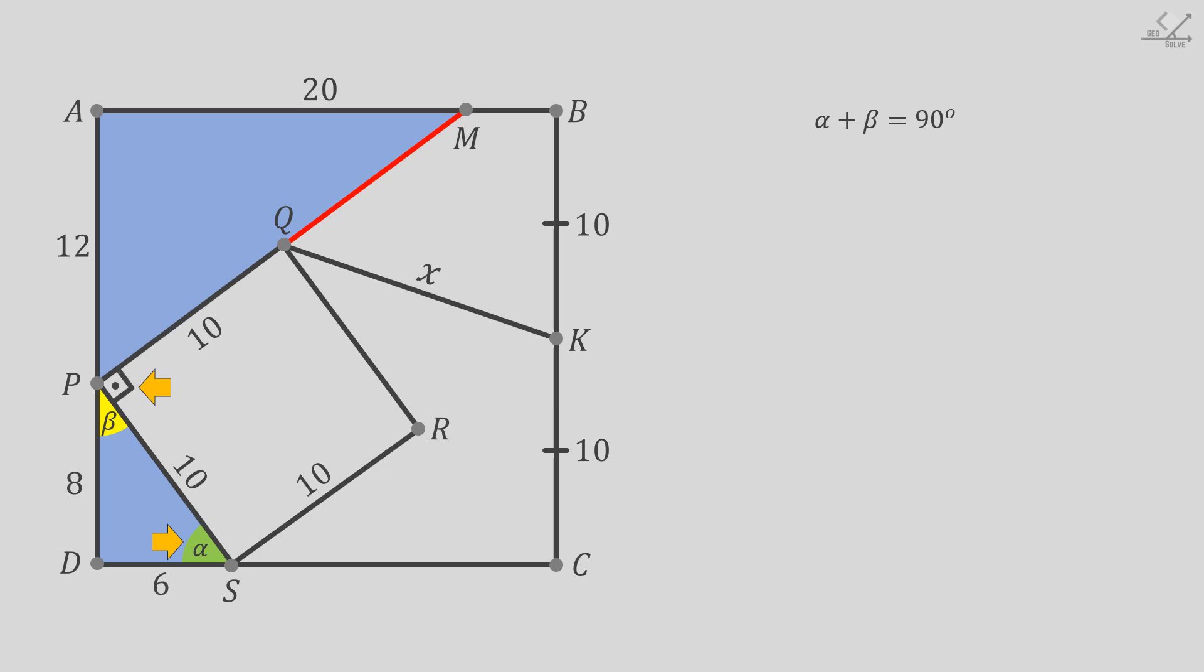So alpha plus beta will be 90 degrees. We know that this angle is 90 degrees. Since alpha plus beta is 90 degrees, this angle must be alpha, and so this angle will be beta. So we show that these blue triangles are similar by angle-angle rule.